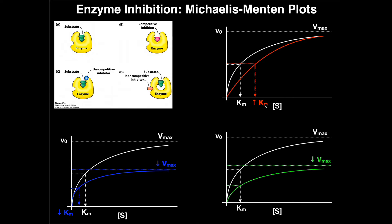So a competitive inhibitor increases the Km of the enzyme. What does that mean? If you have a competitive inhibitor in your system, in order to get to the same rate you're going to have to add a lot more substrate. Why? Because if the competitive inhibitor is blocking the active site, the inhibitor binds in accordance with its concentration relative to the normal substrate — so the enzyme needs a lot more substrate to catalyze reactions at the same overall rate. The Vmax isn't changed, but the Km is increased, meaning the enzyme needs more substrate to have the same efficiency. Competitive inhibitors bind in the same active site that the substrate does.